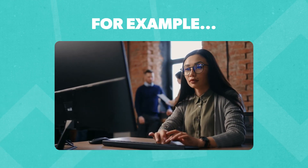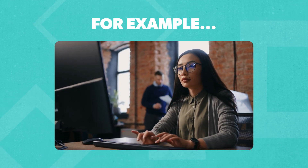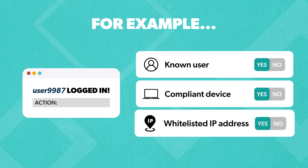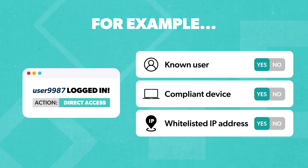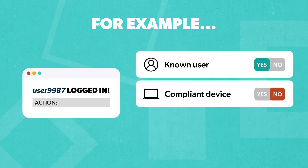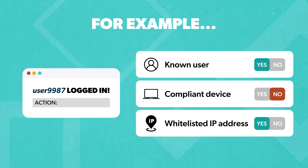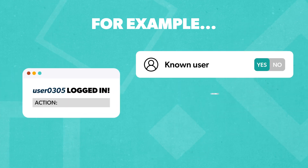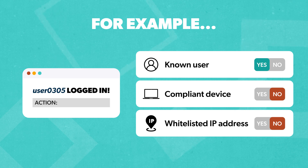For example, an IT admin could set up the following conditions. If a known user tries to log in from a compliant device and a whitelisted IP address, then they may bypass the multi-factor authentication challenge. However, if a known user tries to log in from an unmanaged device but from a whitelisted IP address, then they must complete an MFA challenge. And lastly, if a known user tries to log in remotely and without a VPN, then they will be denied access altogether.